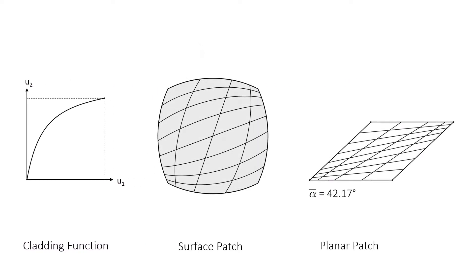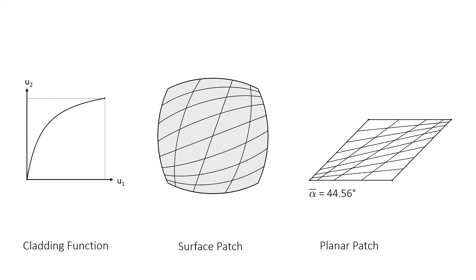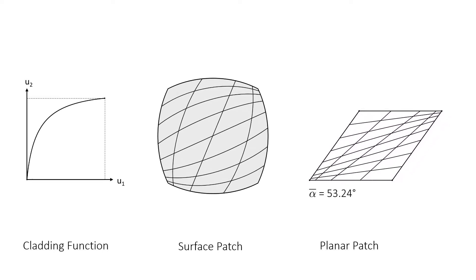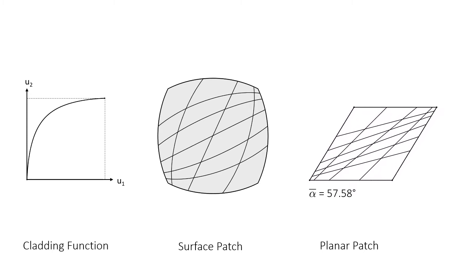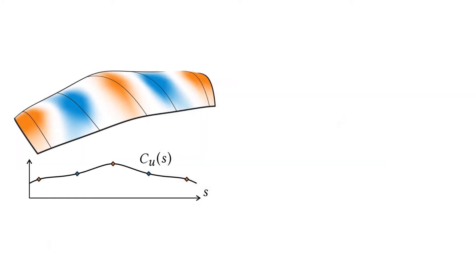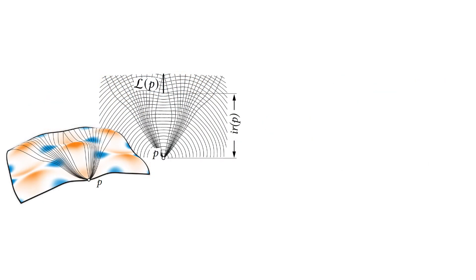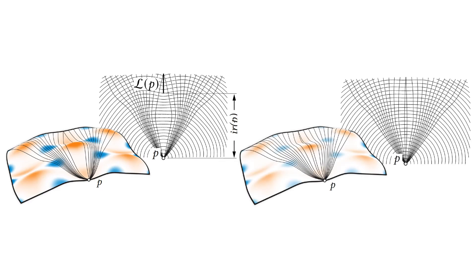The cladding function determines the distribution of members in the planar and the spatial grid. We set constraints to prevent invalid cladding functions. After finding a minimum set of grid members to capture surface features well, we present a method to densify the grid. We propose a surface patch analysis and smoothing method that helps us to identify input surfaces that cannot be properly represented with an elastic grid.